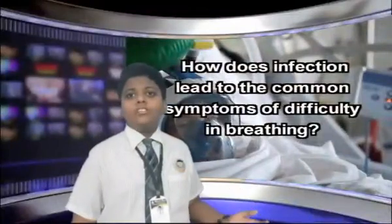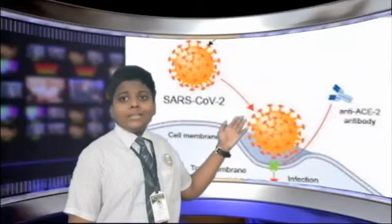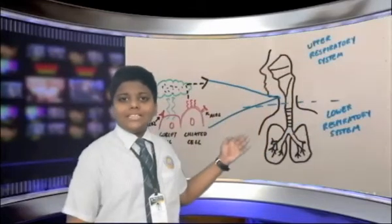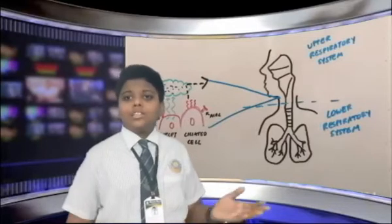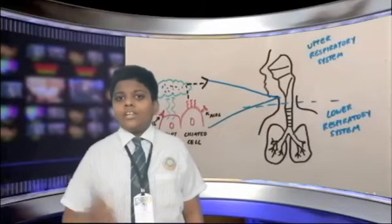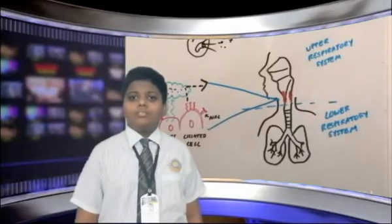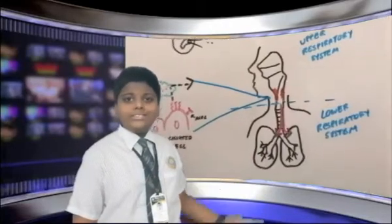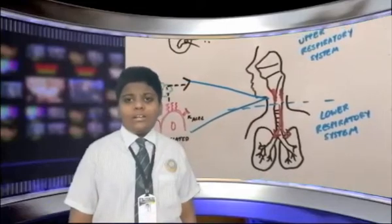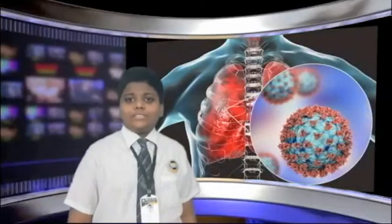So how does infection lead to the common symptom of difficulty in breathing? ACE2 is found especially in the cells that line the upper respiratory tract — called goblet cells and ciliated cells. These cells are front-line defenders. Goblet cells produce mucus which traps bacteria and pathogens. Ciliated cells then sweep the debris and mucus out, cleaning away the unwanted particles. When the virus attacks goblet and ciliated cells, it causes inflammation and irritation in the airways, which stimulates a dry cough. If you're healthy, your immune system will be able to fight off the infection before it spreads down to the lower respiratory tract.